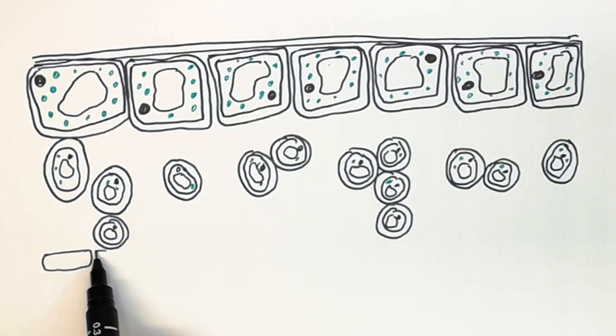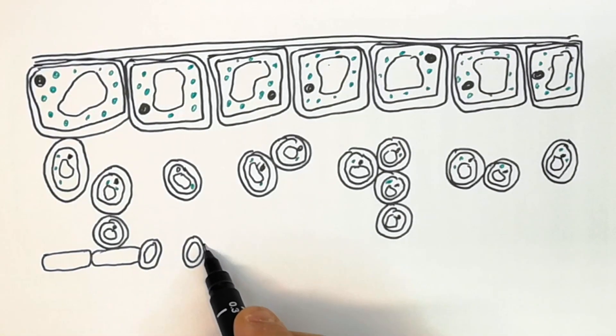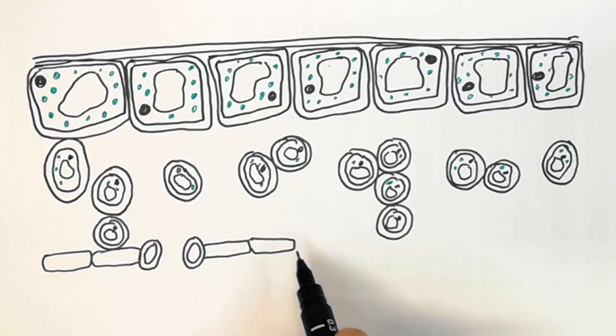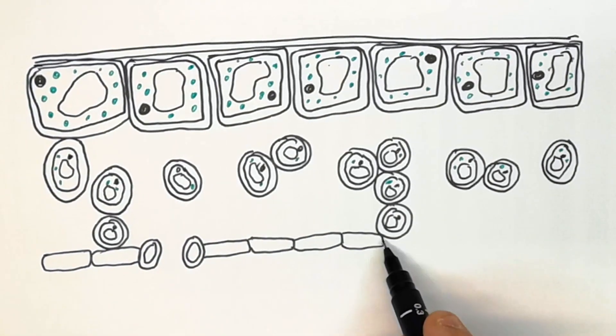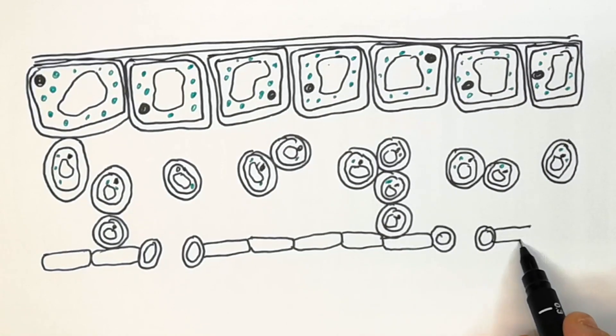This is the lower epidermis of the leaf. It is the underside of the leaf with guard cells and stomata, which we're going to talk about later and also in another video.